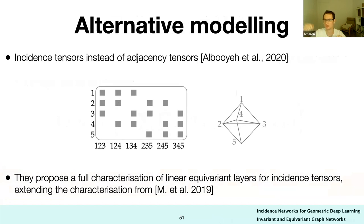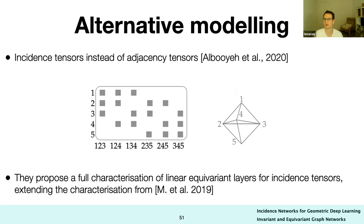Finally, a paper by Azizian and Lelarge proposed folklore GNNs — GNNs with generalized multiplication between tensors — shown to be aligned with (k+1)-WL. There is also a different representation approach using incidence tensors instead of adjacency tensors — nodes-by-edges or nodes-by-faces matrices — studied for equivariant layers in a 2020 paper by Albouy, generalizing our 2019 work.